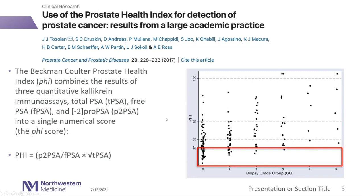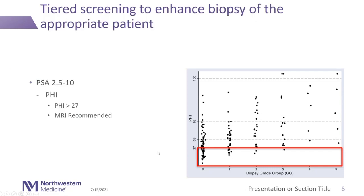For individuals who had PHI below 27, you rarely missed a clinically significant prostate cancer — there were only three individuals in our approximately 200-patient series. We adopted a strategy using PHI of 27 as a relative cut point to consider next steps in testing. The PHI test has been calibrated for PSA between 2.5 and 10 — you may go as low as 2, but below that it's not as well validated.